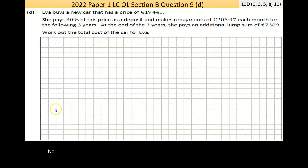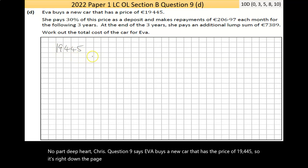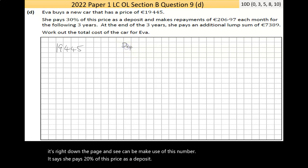Part D, part of question 9. It says, Ava buys a new car that has a price of €19,445. So let's write that on the page. She pays 30% of this price as a deposit. So sometimes it's useful for me to make sense of it and go, well, that's 30%, €19,455 by 30%. Whatever that number is, that's her deposit.